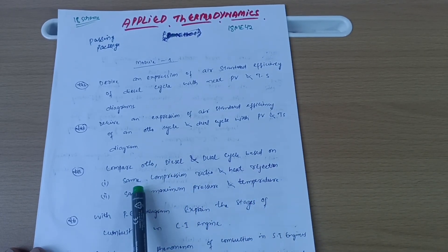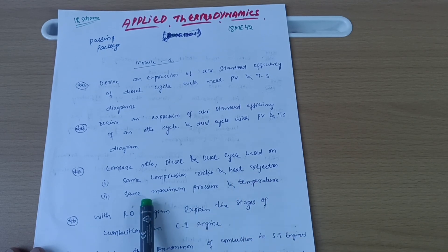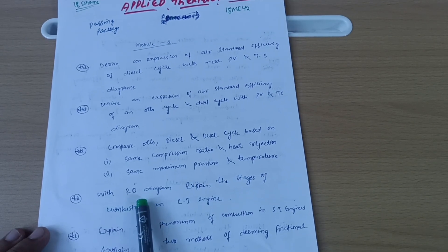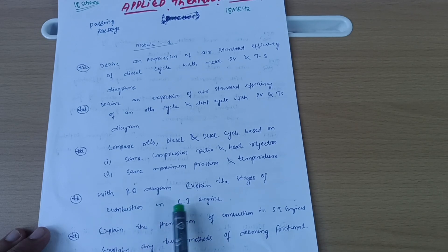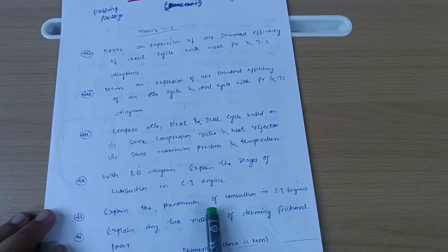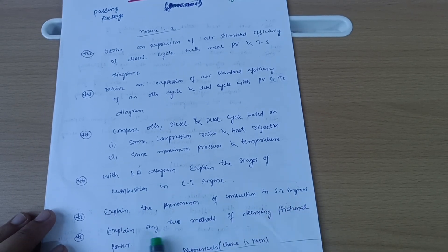Compare these three - Otto, diesel, and dual cycle - based on same compression ratio, heat rejection, same maximum pressure and temperature with PT theta diagram. Explain the stages of combustion in CI engine, explain the phenomena of combustion in SI engines, explain any two methods of determining frictional power. These are super important questions from Module 1.